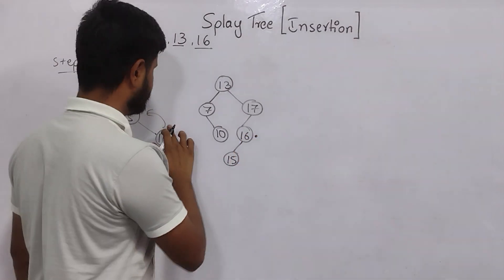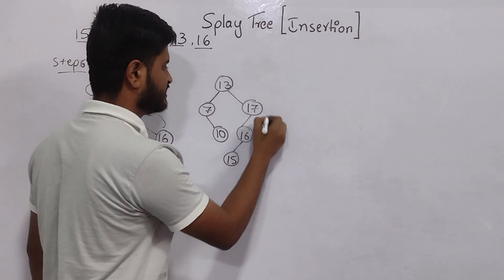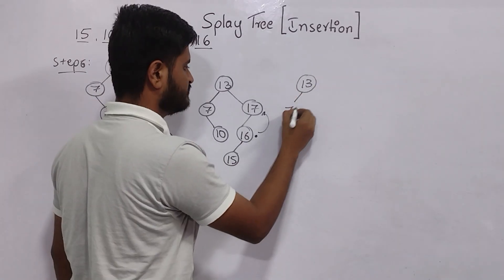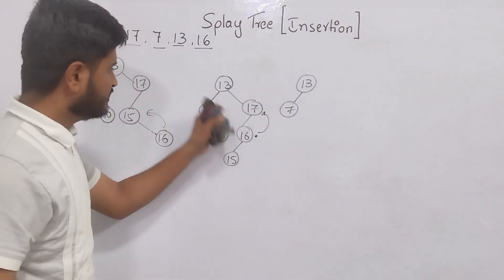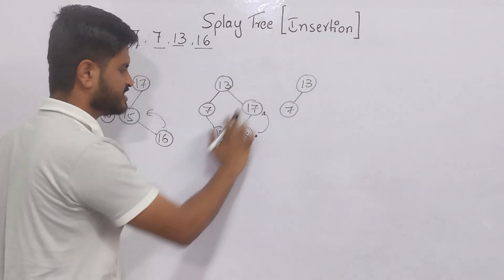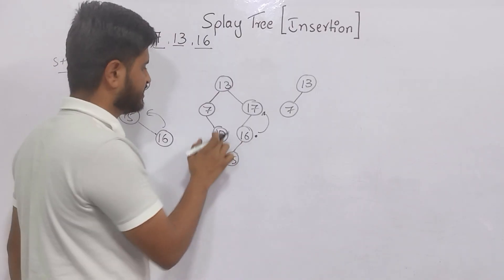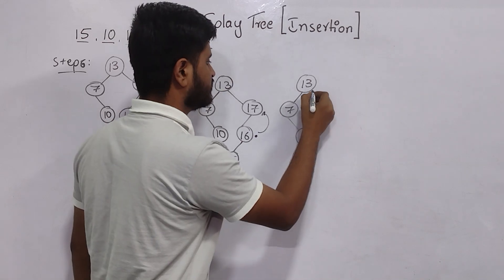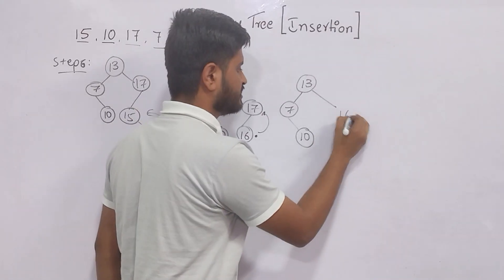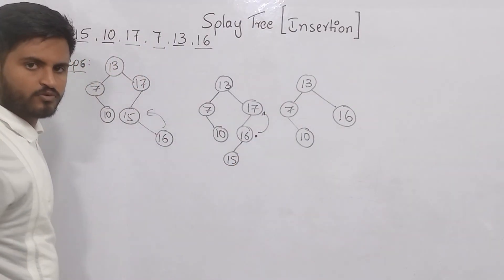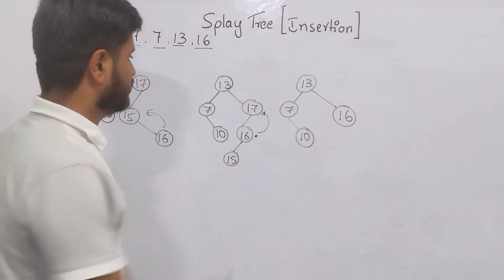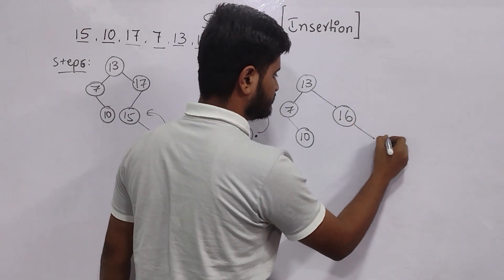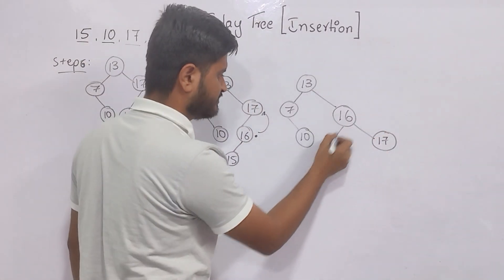My inserted node 16 is here and I must make it the root. I exchange with one level up. 13, 7, and 10 stay the same — since we are inserting in the right subtree, the left subtree stays the same. I exchange 16 with 17: 16 comes here. We are left with 17 and 15. Upside to downside: 17 is greater than 16, so it goes right. 15 is less than 16, so it goes left.